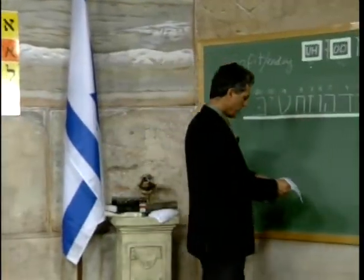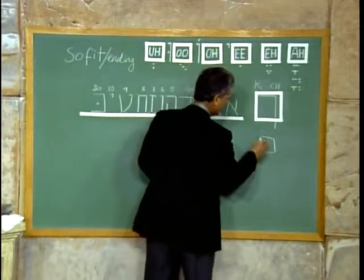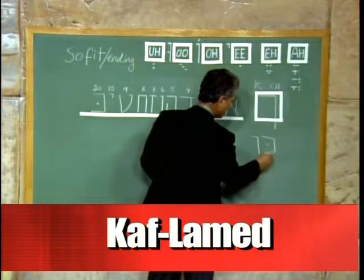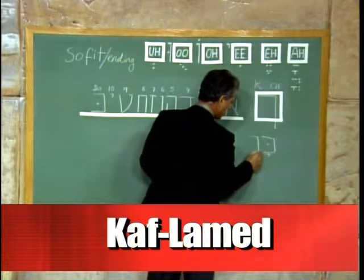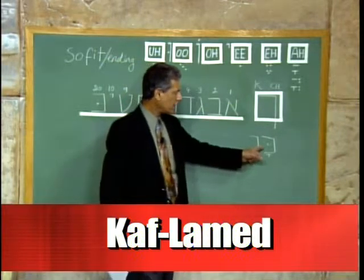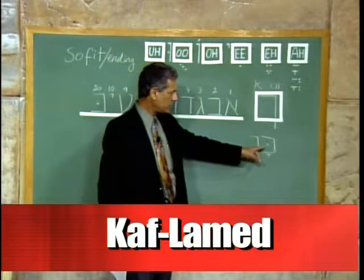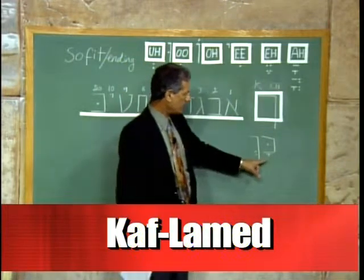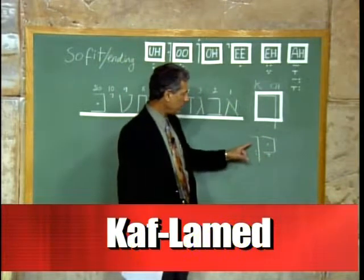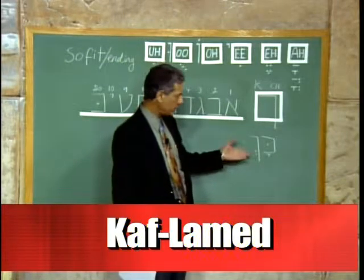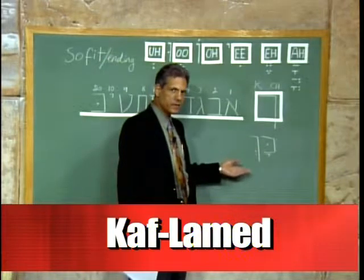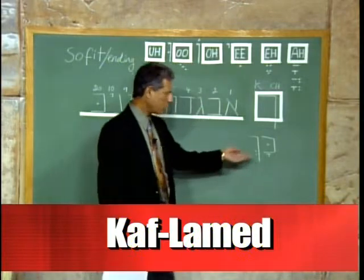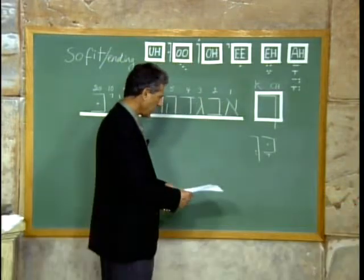Let's look at a word with kaf sofit — how about kaf and another kaf sofit? That word is 'kach.' Here the first kaf has a dot inside, has an 'ah' sound, so it's 'ka.' And that kaf at the end of the word — because it happens to be at the end of the word — it's written as kaf sofit, making 'kach.' In Hebrew, 'kach' is just a word that means 'that's the way it is,' but for now we're just exercising, so the meaning is not that important.